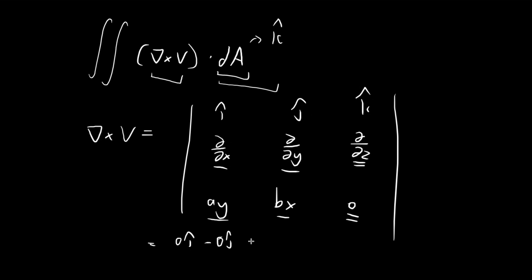And then for the k direction, you're differentiating BX with respect to X. So you get B. And then you're differentiating AY with respect to Y. So you have minus A. And then you have K. So this is in the k direction. So in the end, you see that the curl is equal to B minus A in the k direction.